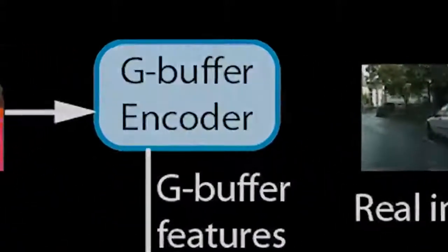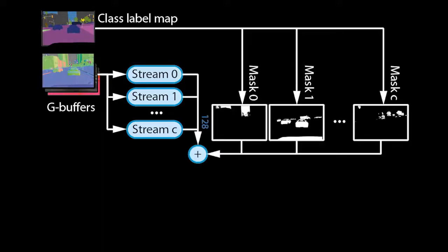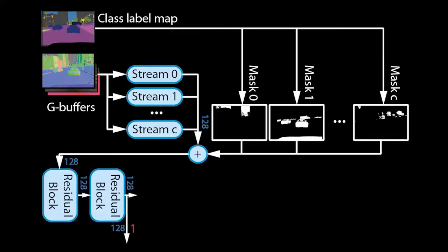Let us now zoom in on the G-buffer encoder. From the G-buffers, we can derive a semantic class label map, which assigns an object ID to every pixel. We pass the G-buffers through multiple convolutional network streams and fuse the streams again based on the object IDs. This allows the encoder to learn different ways of processing for each type of object — for example, trees will be treated differently from cars. The resulting feature tensors are further processed by residual blocks, which output tensors at multiple scales.